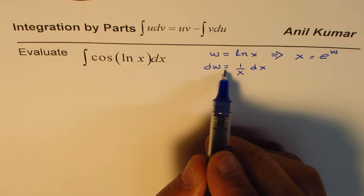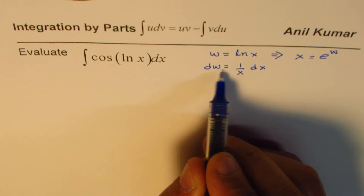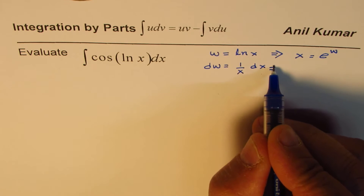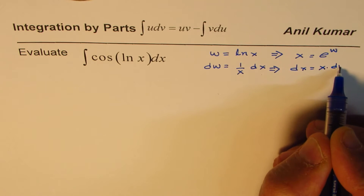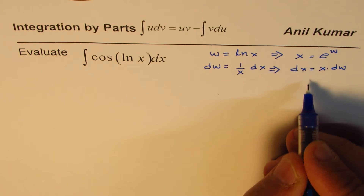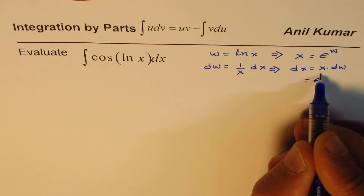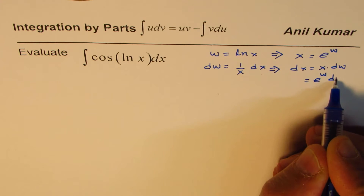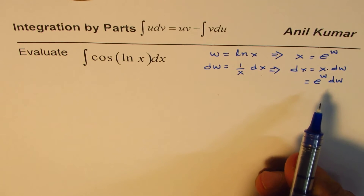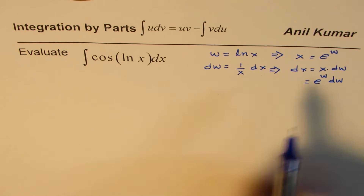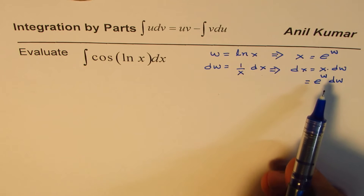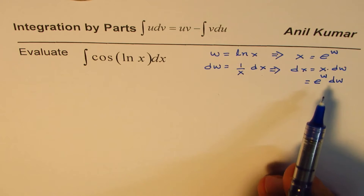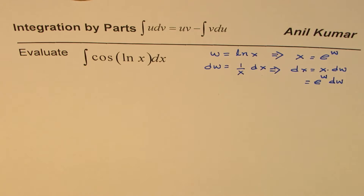Since dw = (1/x) dx, we can write dx = x dw. And since x = e^w, we can write dx = e^w dw. This is a very important step: whenever you have ln functions, you can write your equation as an exponential combination, as we just did. Make a note of this kind of substitution — it will be very useful.